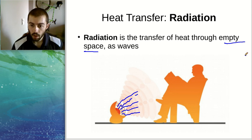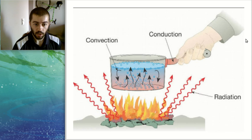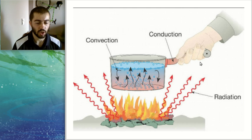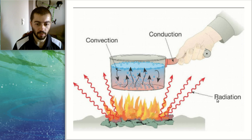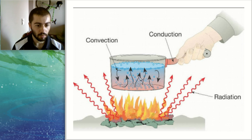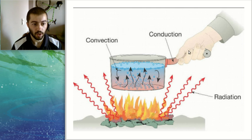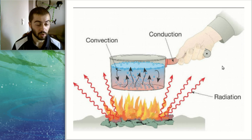Now that we've covered the three modes of heat transfer, pause the video and look at this picture that demonstrates all three modes in one setting. Try to explain why the movement of water inside the pot represents convection, why the person touching the handle represents conduction, and why the fire represents radiation. Make sure you can justify why each labeled example is representative of its mode of heat transfer.